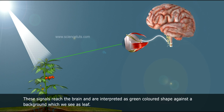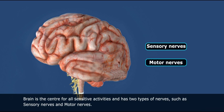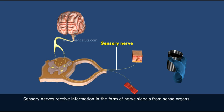The brain is the center for all sensory activities and has two types of nerves, such as sensory nerves and motor nerves. Sensory nerves receive information in the form of nerve signals from sense organs.